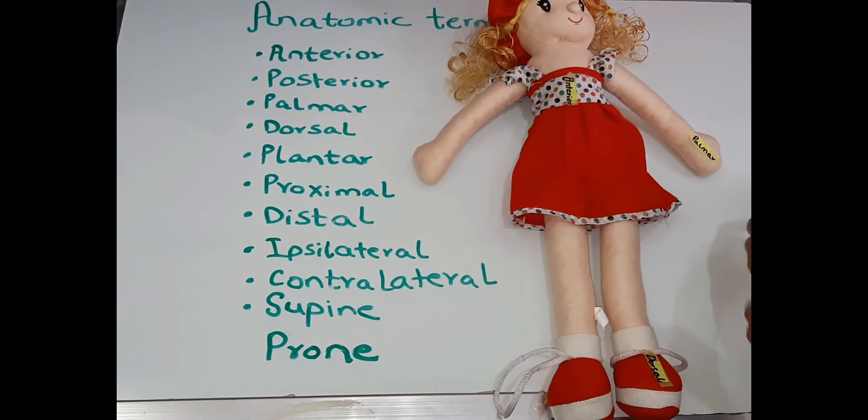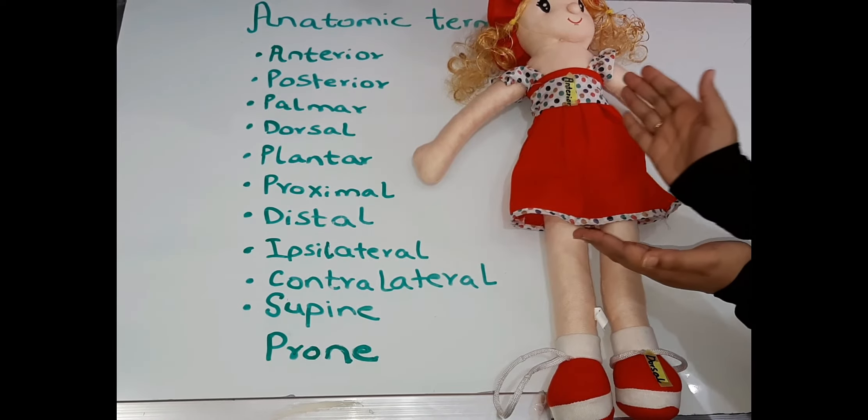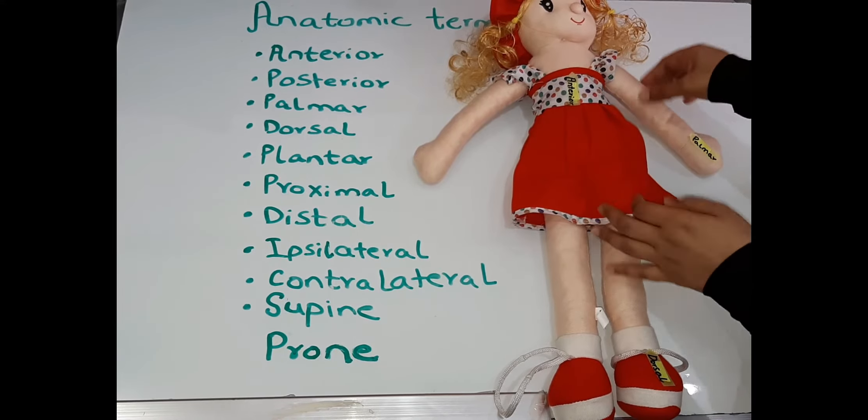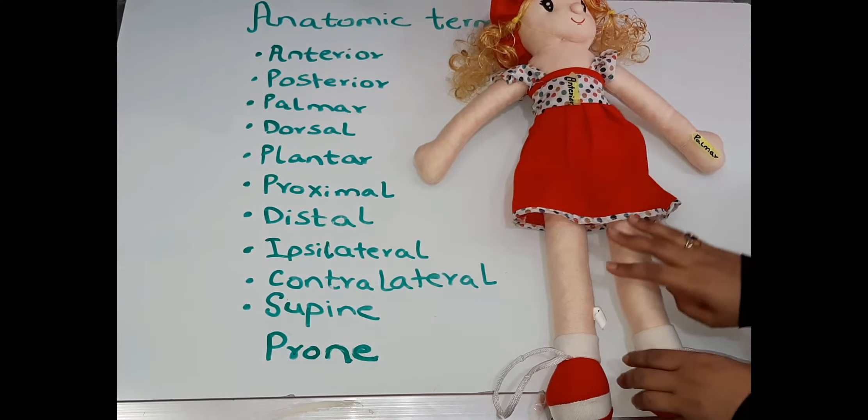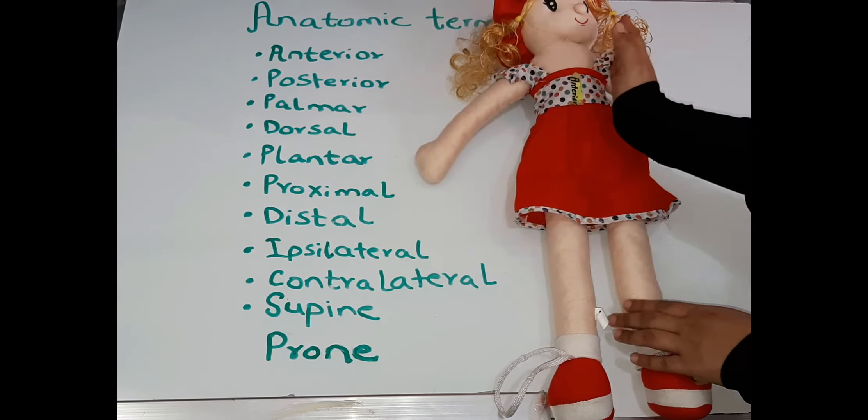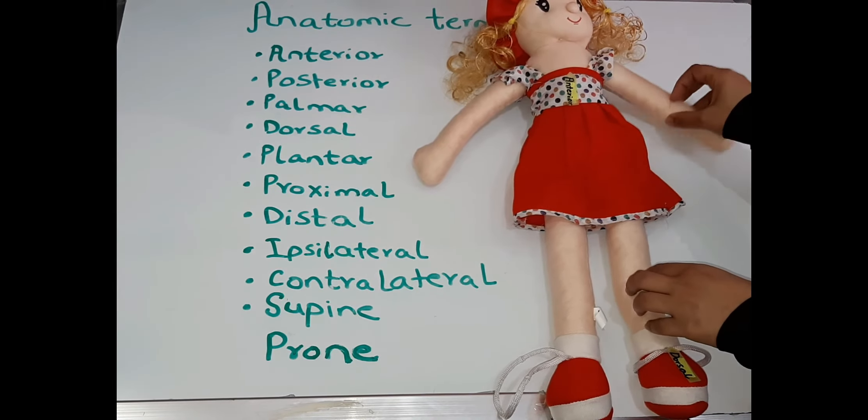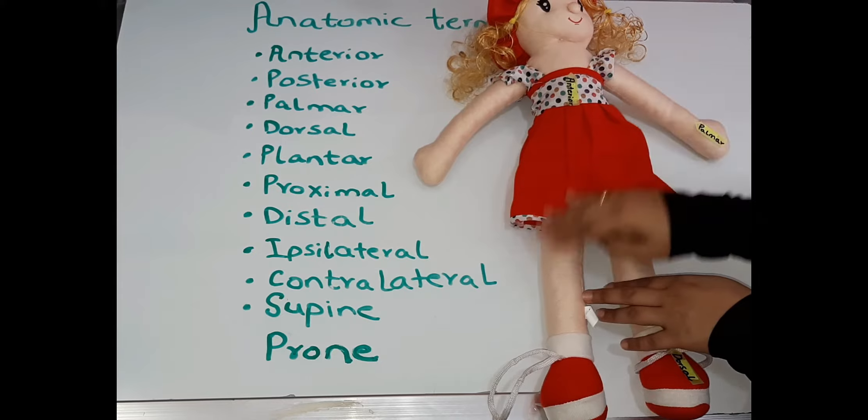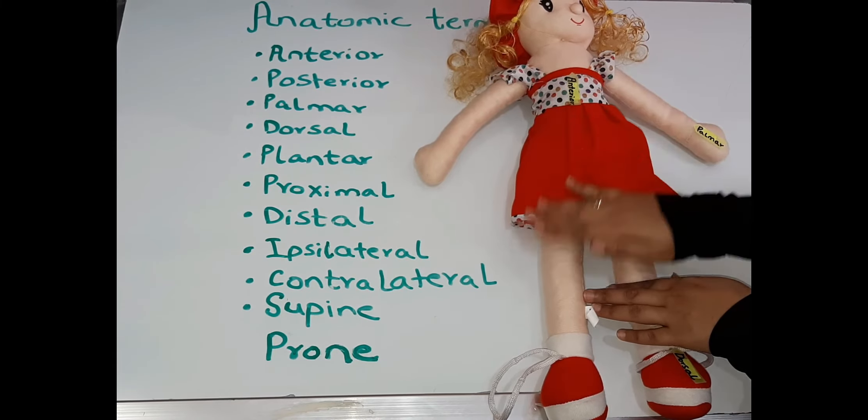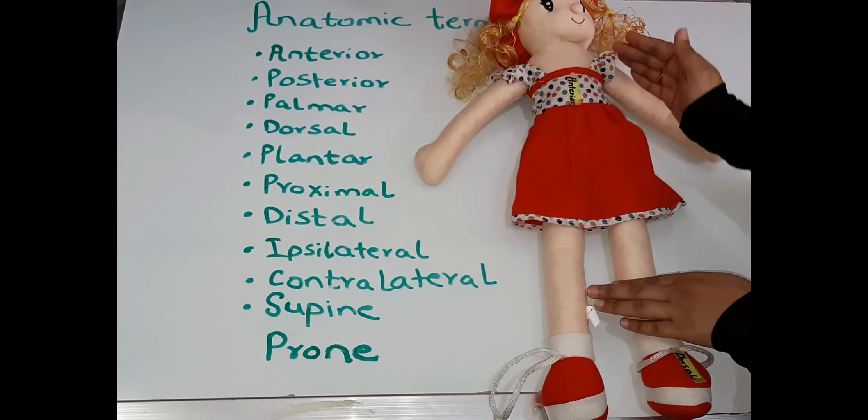The terms ipsilateral and contralateral means, ipsilateral mean on the same side of the body. So the left arm and the left leg are ipsilateral. They are on the same side of the body while the left arm and the right leg are contralateral. That means that they are on the opposite sides of the body.